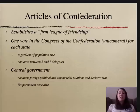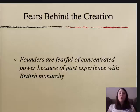The central or national government did not have a permanent executive. Instead, Congress served as the permanent body of power at the national level. The founders and the American people were really fearful of having a concentrated amount of power in the hands of an executive.